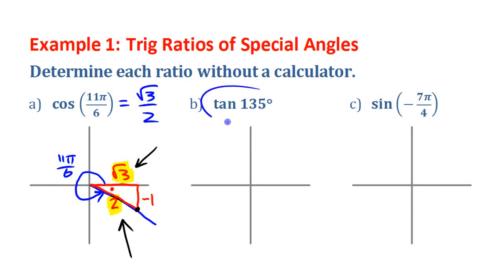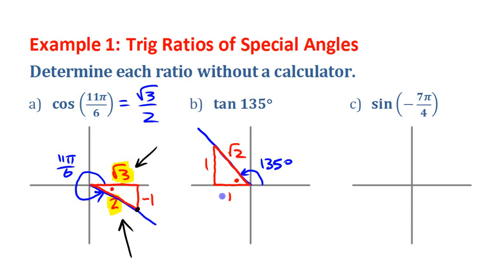Next, tangent of 135 degrees. 135 degrees is related to 45 degrees and is in quadrant 2. The reference angle is 45 degrees, so we draw a reference triangle using the 1-1-√2 triangle. The horizontal side is negative because it's to the left. For tangent, we want the y-coordinate over the x-coordinate, or opposite over adjacent. That gives us 1 over negative 1, which simplifies to negative 1.